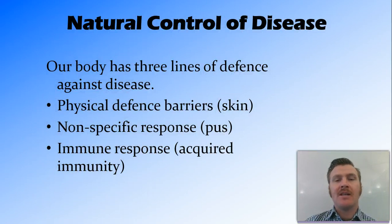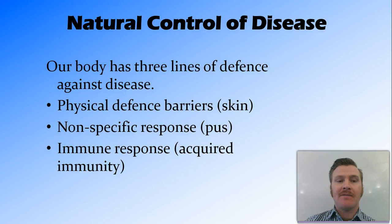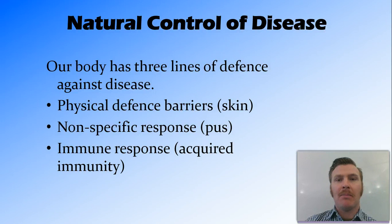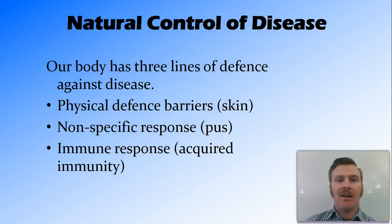The natural control of disease is the natural process that occurs in our body to fight disease. There are three lines of defense: the physical barriers, including the skin; non-specific response, which involves phagocytes, white blood cells, leukocytes, and pus; and the immune response, or acquired immunity, which is a specific response. We'll now go into more detail for each one of these lines of defense.